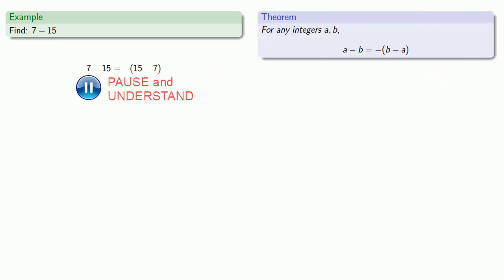To find 7 minus 15, our theorem says it's the same as the additive inverse of 15 minus 7. Well 15 minus 7 is 8 and so our result is additive inverse of 8.